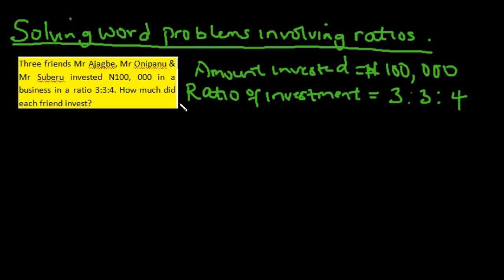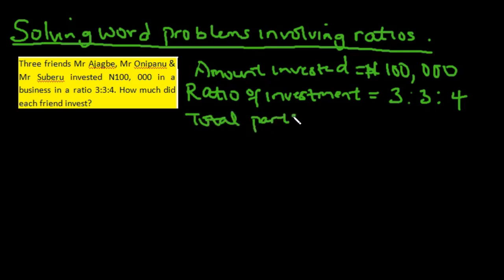Mr. Ajakbe contributed three parts of one hundred thousand naira. Mr. Unipan contributed three parts of one hundred thousand naira, while Mr. Suberu contributed four parts of one hundred thousand naira. So how do you calculate how much each friend invested?